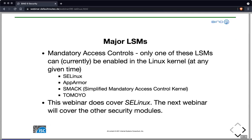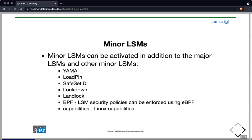We distinguish major LSMs that implement what's called mandatory access control. Of the major LSMs, only one can be enabled at any given time. Major LSMs are SELinux, which we cover this time, AppArmor, SMAC, and Tomoyo, which we will cover in the next webinar. Besides the major LSMs, there are minor LSMs that can be activated in addition to the major LSMs and also in addition to other minor LSMs. We will cover some of these in a following webinar.